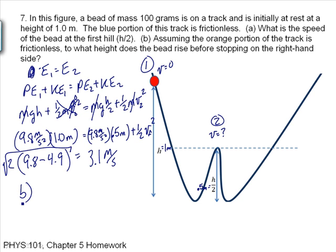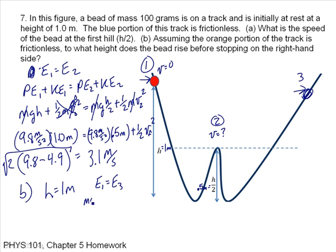For Part B, what height does the bead rise to before stopping on the right-hand side? You should be able to see directly that it rises to h equals 1 meter. Setting E1 equal to E3: both kinetic energies are zero, so mgh1 equals mgh3, meaning h1 equals h3 equals 1 meter.